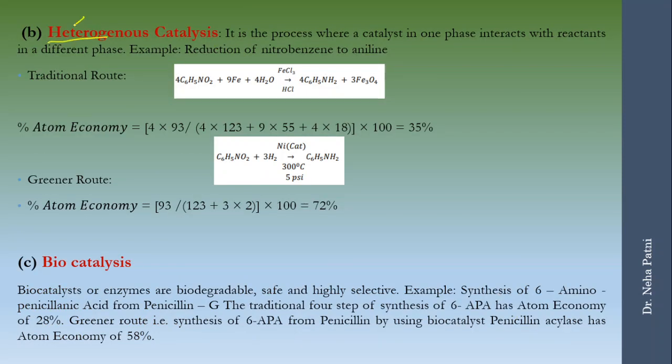If you go by heterogeneous catalysis, hetero means obviously different so the phases are different here. Let's say this is the reaction which is formation of this aniline here. Now this is the reaction - nitrobenzene is formed. If you calculate the atom economy it would be like 4 into 93 divide by 4 into 9 into this and 4 into this, giving you very less atom economy.